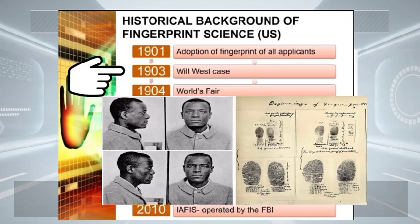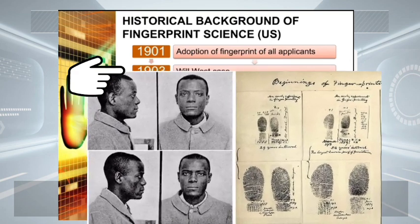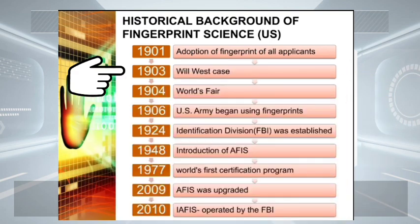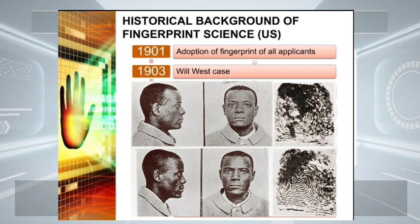Subsequently, the fingerprints of Will West and William West were impressed and compared — the patterns bore no resemblance. The incident called the reliability of Bertillon measurements into question, since the Bertillon measurements during that time were the accepted means of identifying people. It was then decided that a more positive means of identification was necessary.